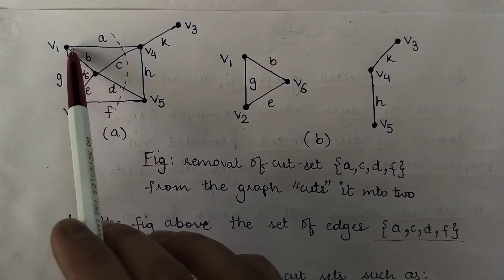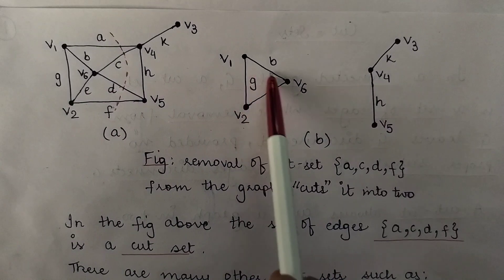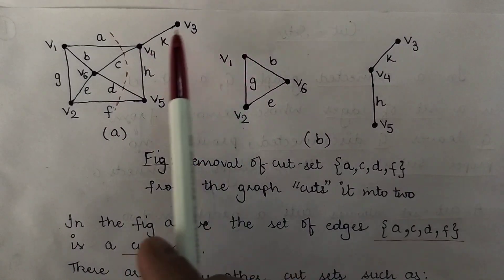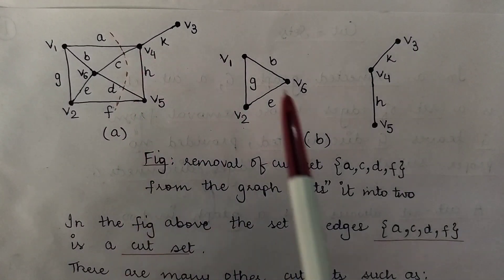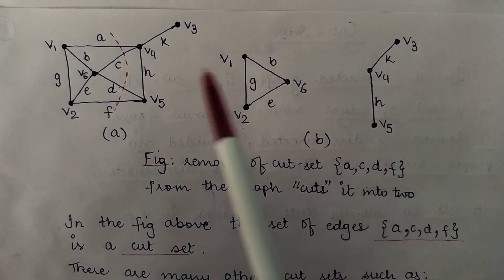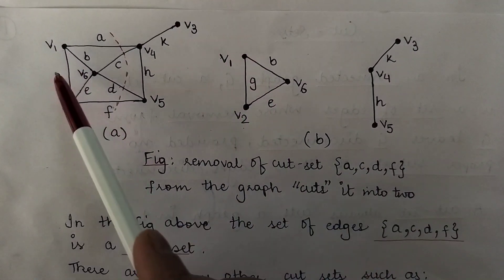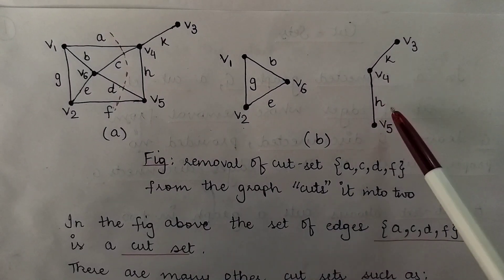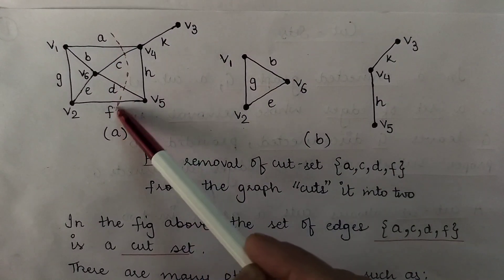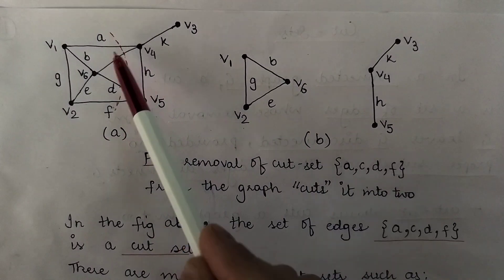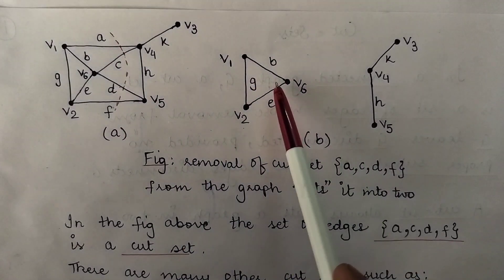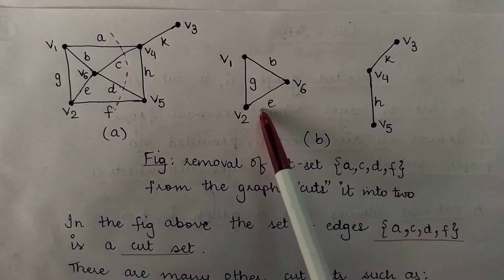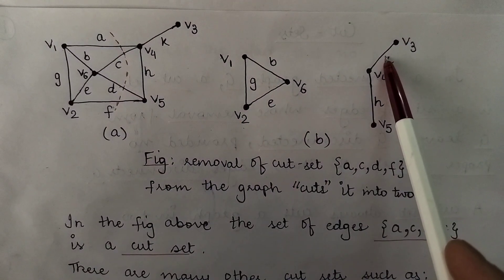One component is the one having edges G, B, and E. So G, B, E is one component. Since we have removed A, C, D, and F, those edges no longer exist. The other component that would exist has edges K and H. So one component comprises edges G, B, E and the other component comprises edges K and H. The removed portion disappears, and the graph is no longer connected — it is divided into two separate components.